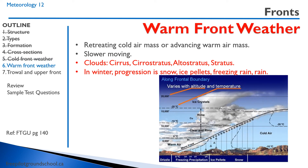By contrast, the warm front is considerably slower moving. One thing you should memorize is the cloud progression because you'll see this pretty much all the time. You start with cirrus, cirrostratus, altostratus, and finally stratus low cloud. If you have them in the winter, we have something called a winter warm front, which will be characterized by precipitation — you first start getting snow, then ice pellets, then freezing rain, and then rain.